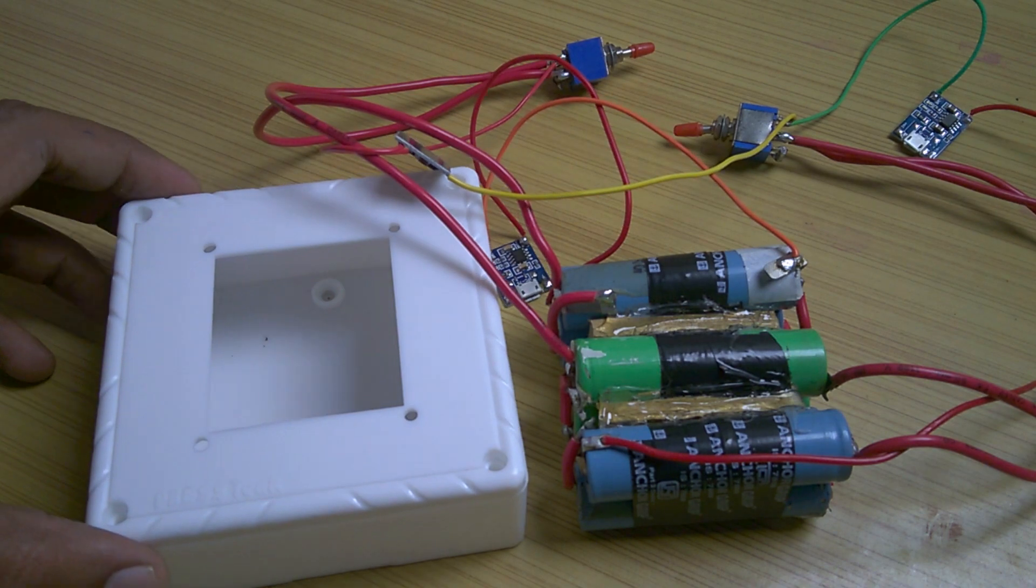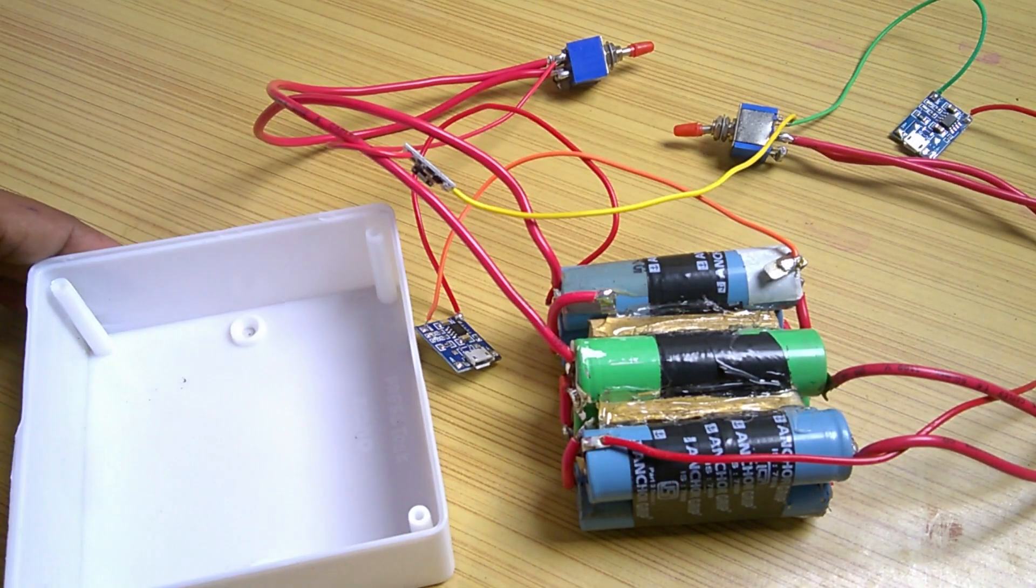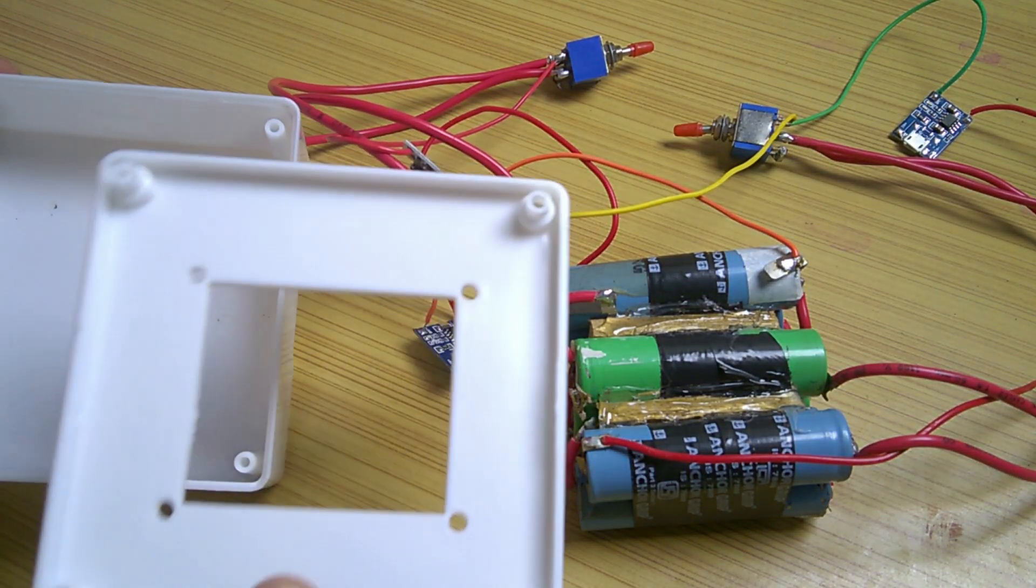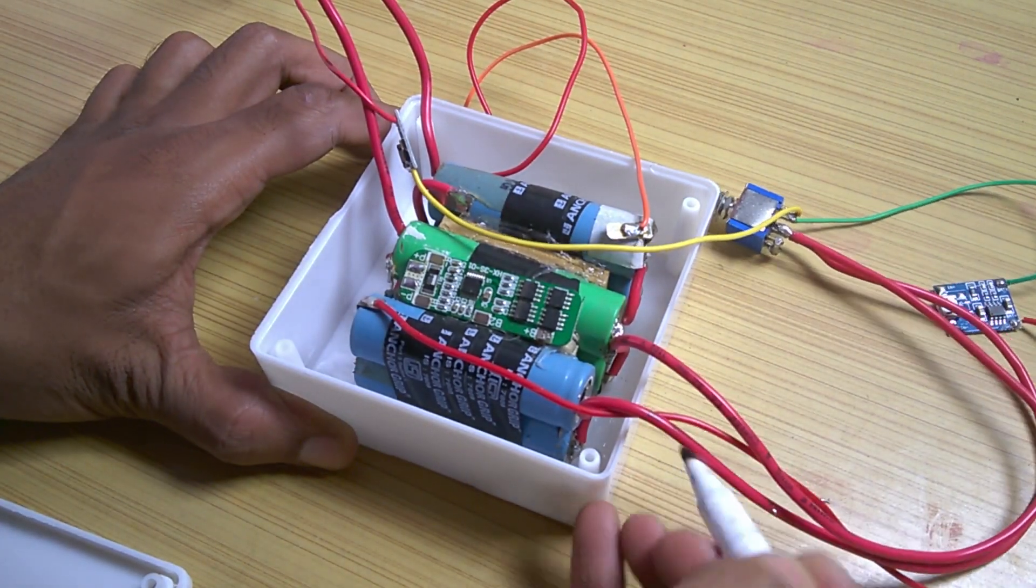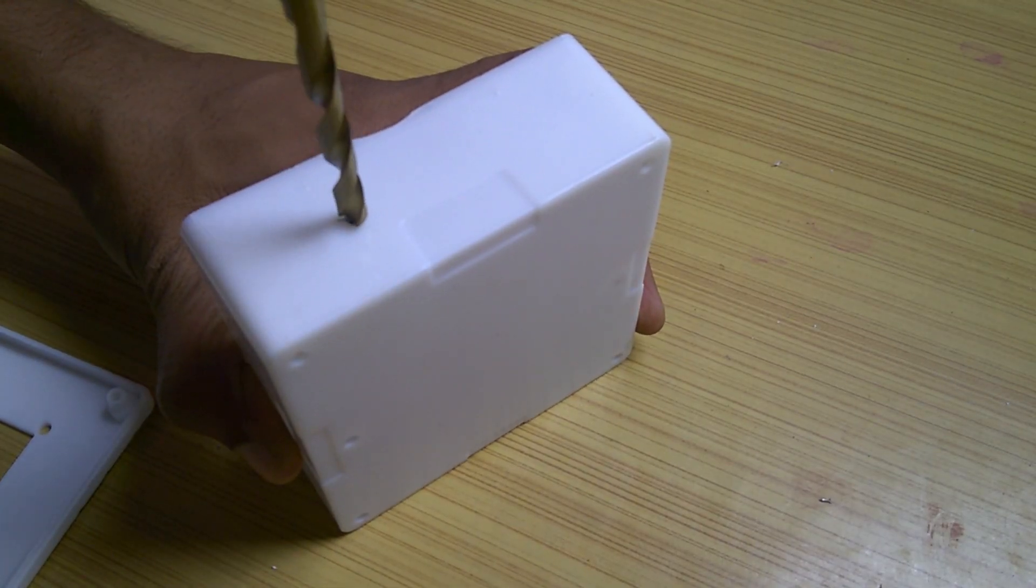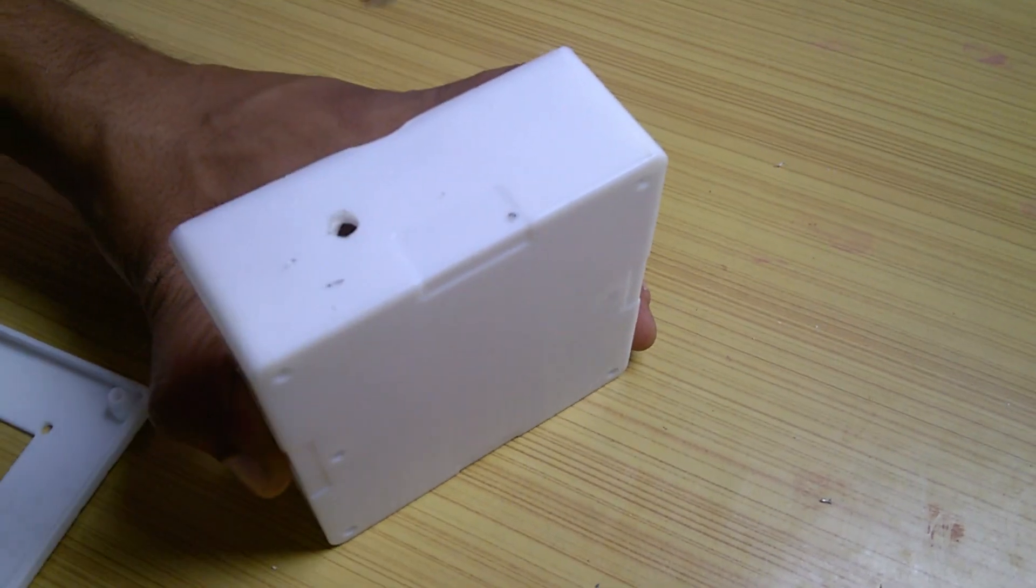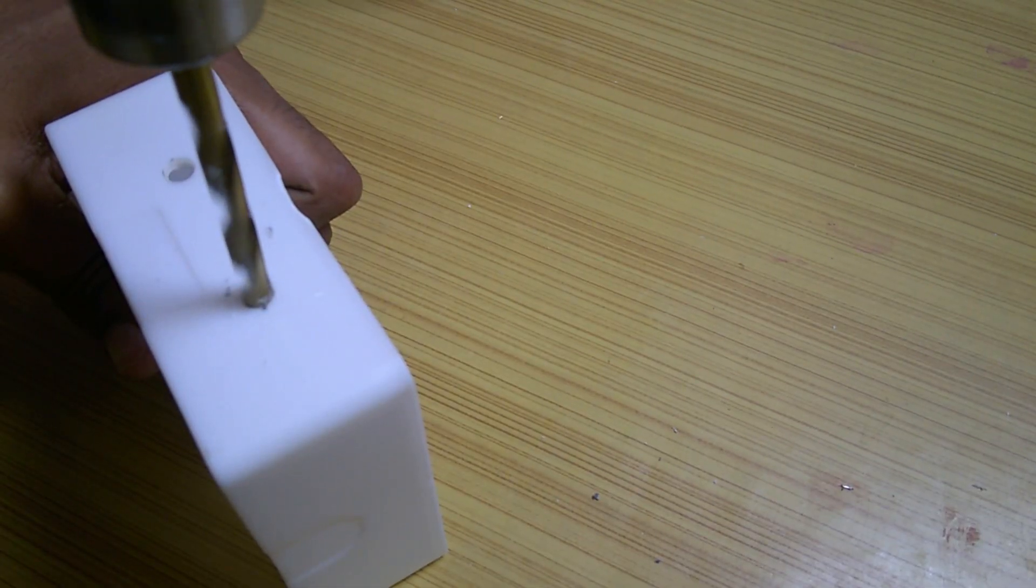For an enclosure, I used this box which has a hole in the middle. And the batteries can fit inside perfectly. I marked the places for the DPDT switches and drilled it using a 6mm drill bit. I made another hole right next to the first hole.